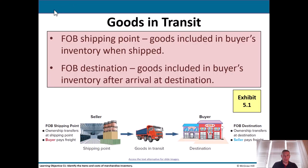The first thing we'll talk about is goods in transit. There are two terms — FOB shipping point and FOB destination. FOB shipping point is when the goods are included in the buyer's inventory when shipped, and FOB destination is when the goods are included in the buyer's inventory after arrival at the destination.